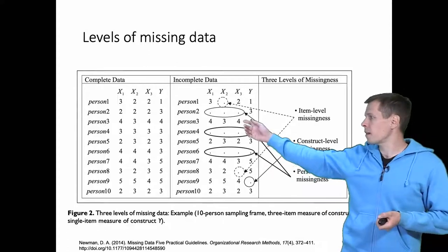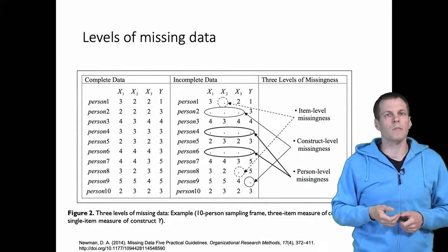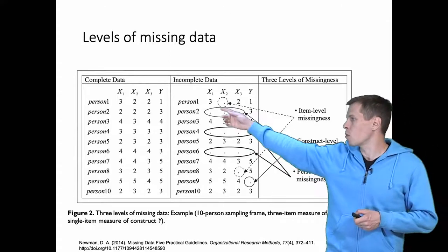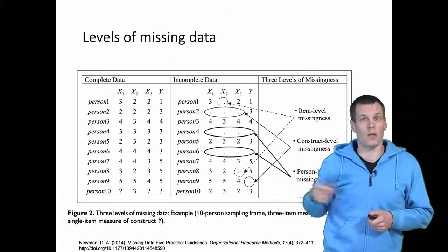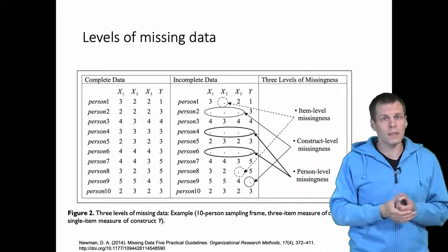This is fairly easy to deal with. In some scenarios we can simply use the mean of X1 and X3 to impute this missing data for X2. So that is an easy case.